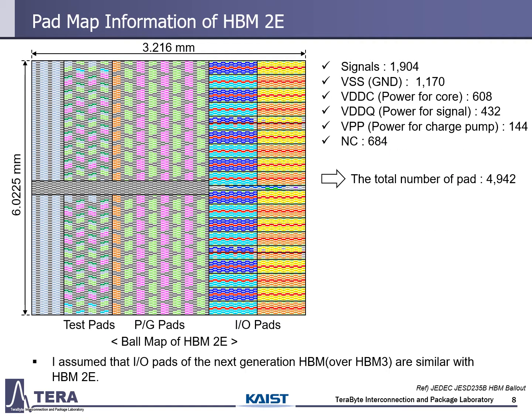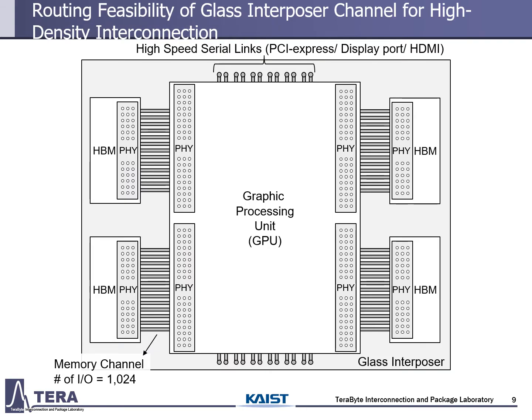This is the pad map information of HBM2E, which is an advanced version of HBM2. In HBM2E, the IO ball roadmap remains the same as in HBM2. I try to apply the glass interposer for next-generation HBM over HBM3. However, since the HBM3 spec has not been released yet, I assume that IO ball paths for next-generation HBMs are similar to HBM2E. In the HBM interface, there are two types of channels: HBM memory channels and high-speed serial ring channels. In this presentation, I focus on HBM memory channels.